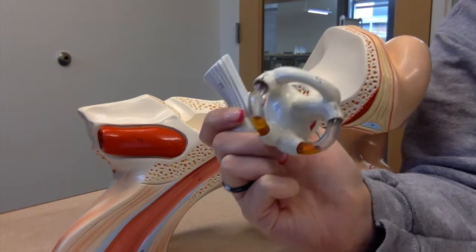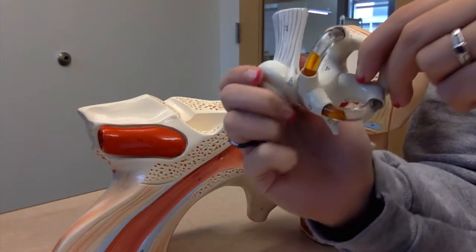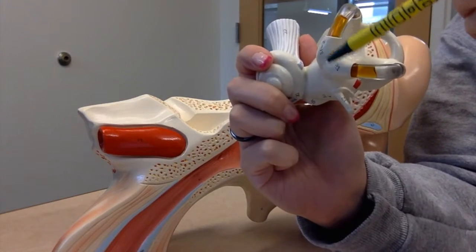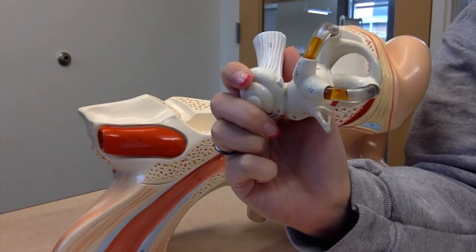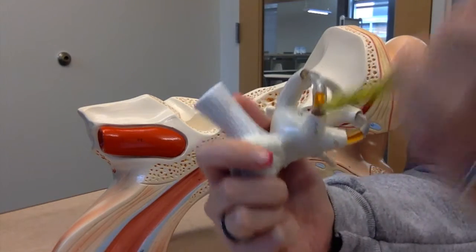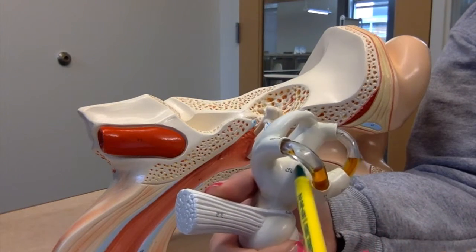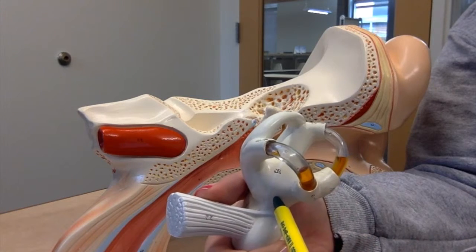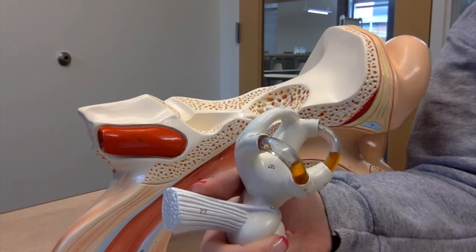The semicircular canals have a little bulge in them, which is called the ampulla. This is where sound is processed and then sent to the vestibule. You can't see with this model, but the vestibule is broken into two parts. The horizontal portion is called the utricle, and the lateral portion is the saccule.